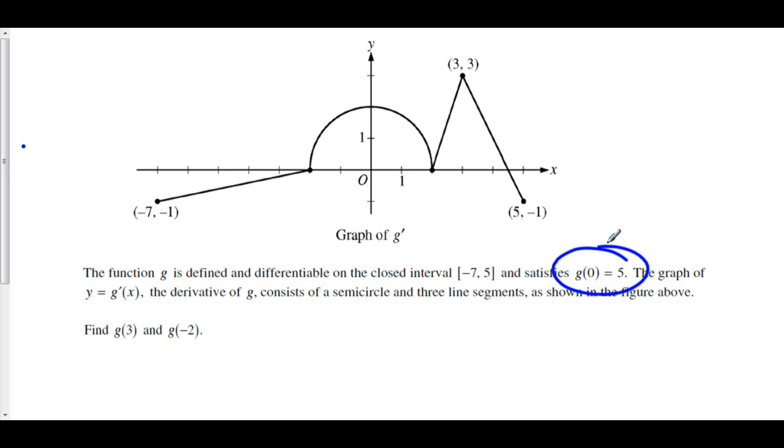g of 0 is equal to 5. That is our initial value of g. Now, we also need the net change in g. And we can find net change by taking the integral of g prime.